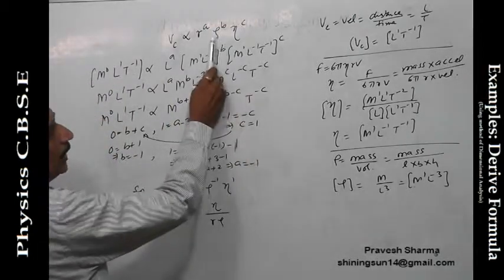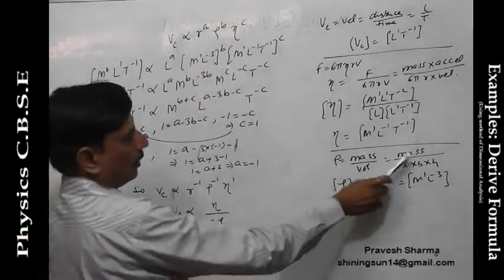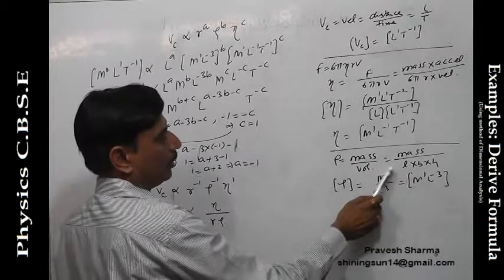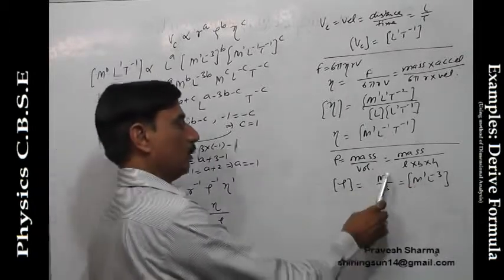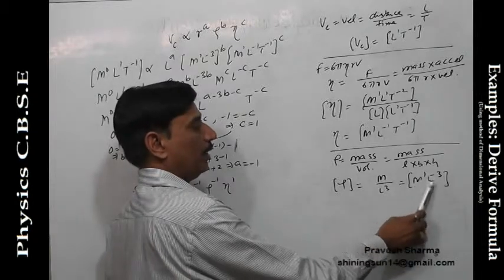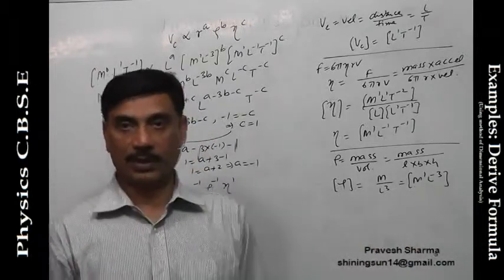Going to density, density we know mass upon volume. Volume is what? Length into breadth into height. All these dimensions they are of length only. M upon L3, so M1 L minus 3 is the dimension formula for density.